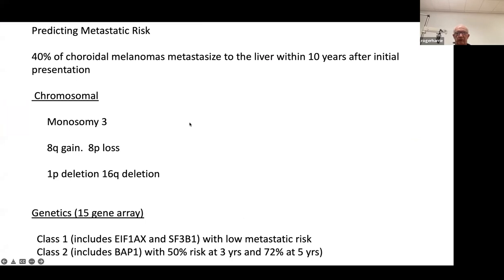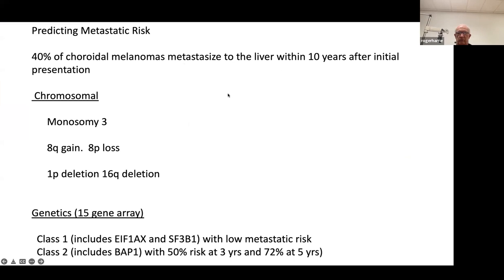Regarding metastatic risk: about 40 to 50 percent of melanomas metastasize to the liver within 10 years. Unfortunately, across the board, melanomas taken together — big, small, whatever — still carry about 50% mortality risk over 10 to 20 years. Despite everything we do now, we haven't really moved that lever very much on metastatic risk, and that's been the case for 50 to 60 years.